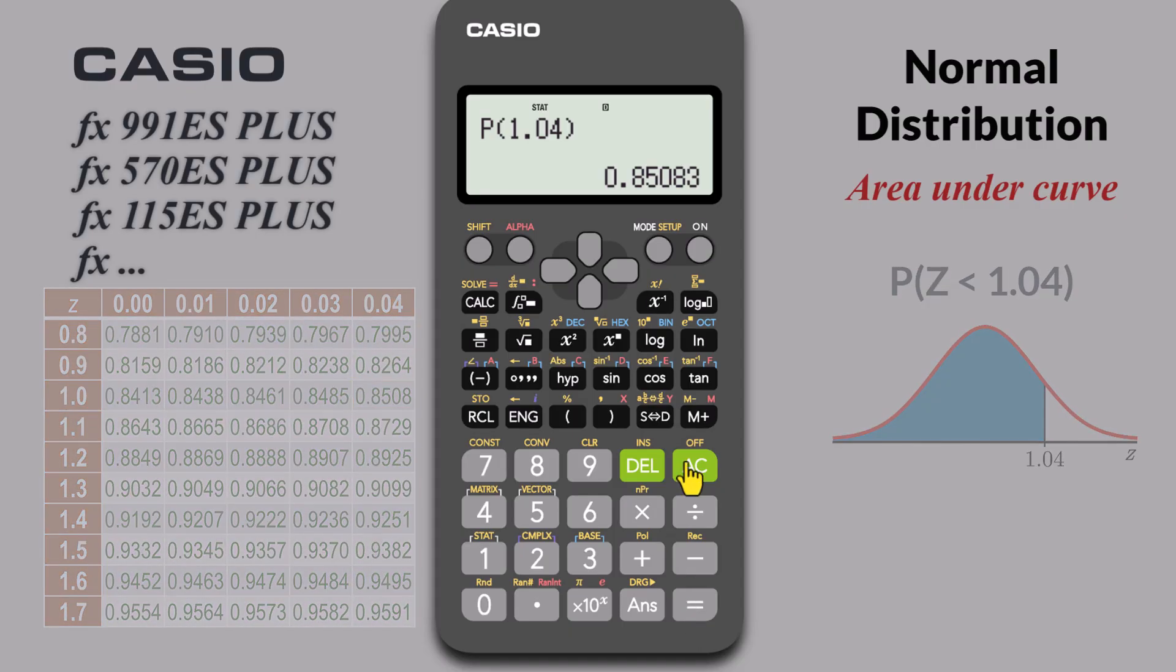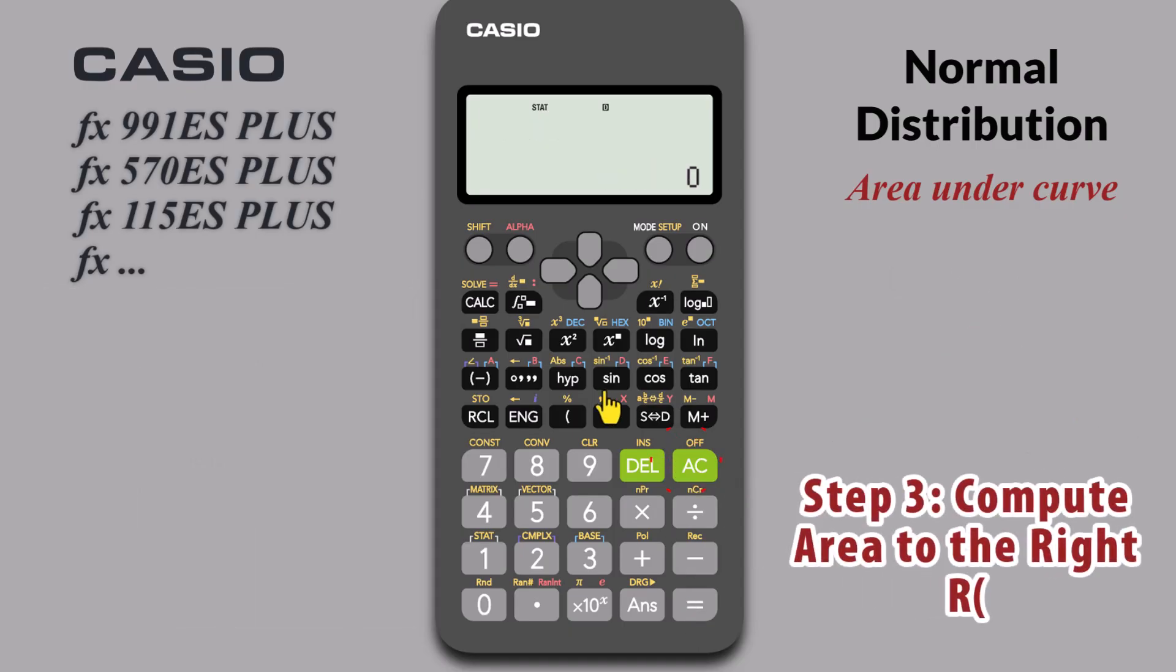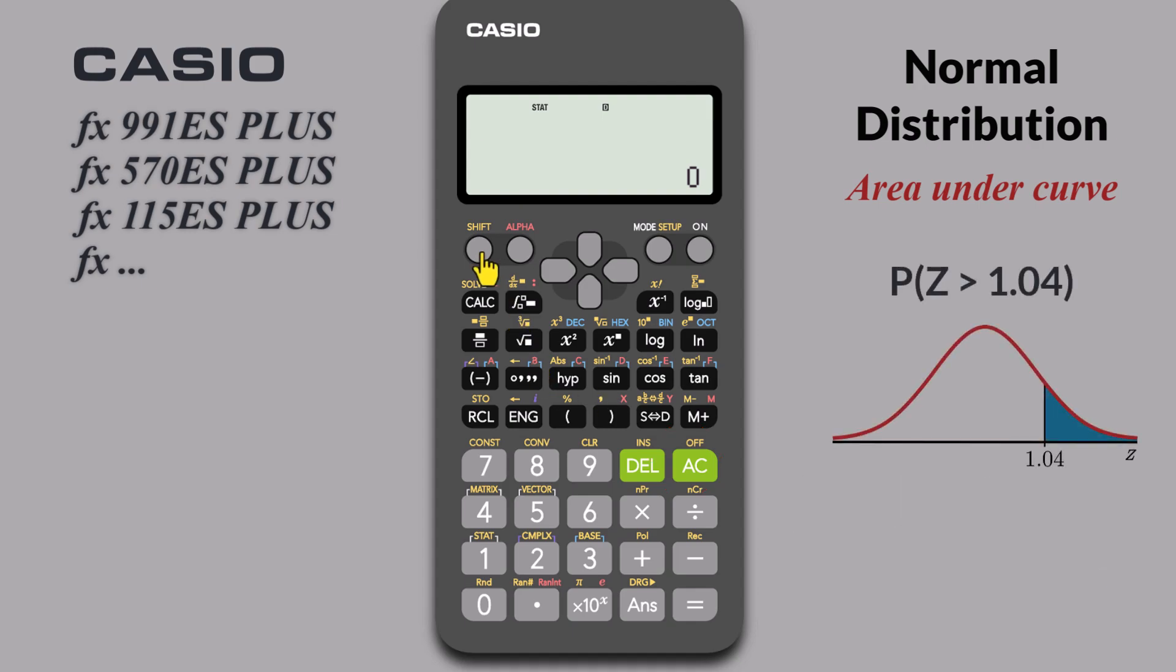Press AC to clear the screen. Now, let's find the area to the right or area greater than Z equals 1.04. Press SHIFT to open the start menu. Press 5 for DISTRIBUTION. For the area to the right, choose 3 for R. Enter 1.04 then equals. The calculator gives us 0.1492. Remember that the total area under the curve is 1, so this is simply 1 minus the area to the left, which was 0.8508.